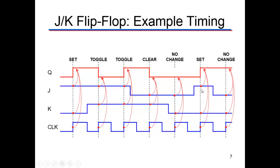Then we turn J to one, K is zero. That's the set. So when the clock comes by, it's going to change Q to one.